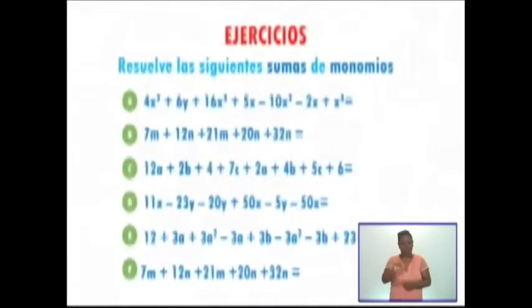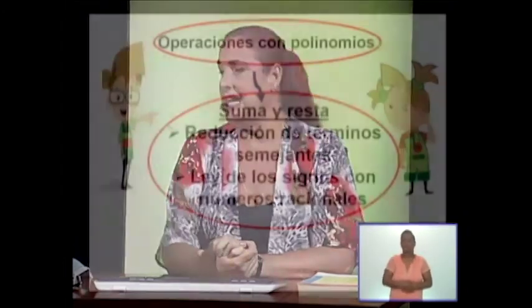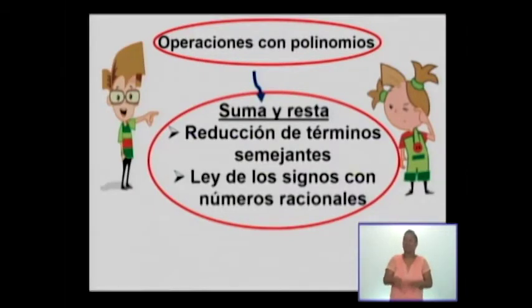A continuación te voy a dejar unos ejercicios. ¿Podrás resolverlos? No te preocupes si no has podido copiar todos los incisos; lo importante es haber copiado por lo menos uno, porque en tu libro de texto aparecen muchos ejercicios de este tipo que puedes resolver en casa. Para resumir el procedimiento de suma y resta de polinomios o monomios: primero, reducir los términos semejantes; y aplicar la ley de los signos con números racionales para obtener la respuesta.